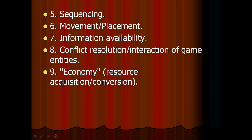Number six is movement or placement. Some kinds of games always have maneuver and geospatial relationships, as in war games. Some don't, but in every game you have some kind of asset that you control, and in many games you can move that or place it somewhere. In the typical video game where you have an avatar, then you're moving your avatar from one place to another.